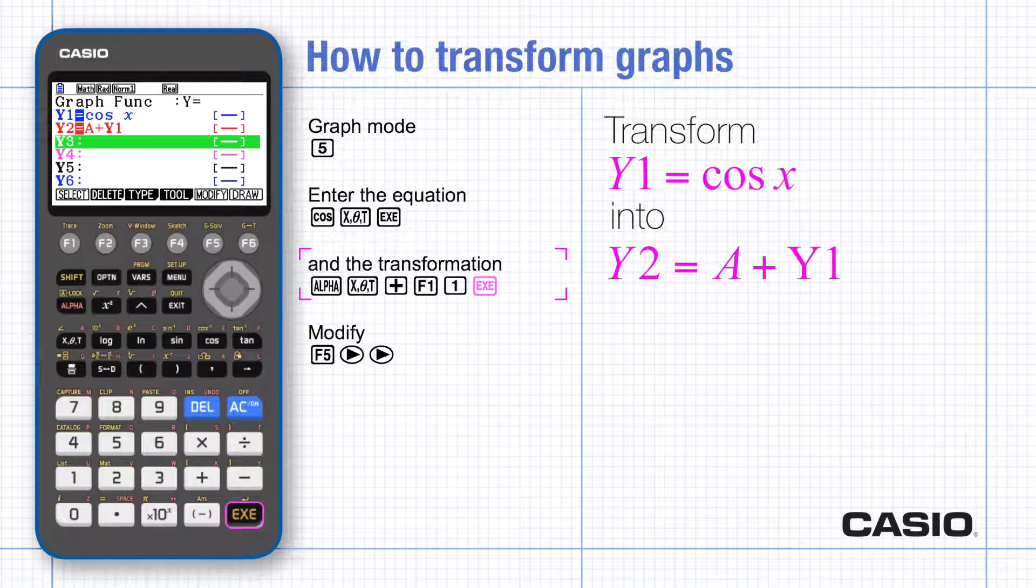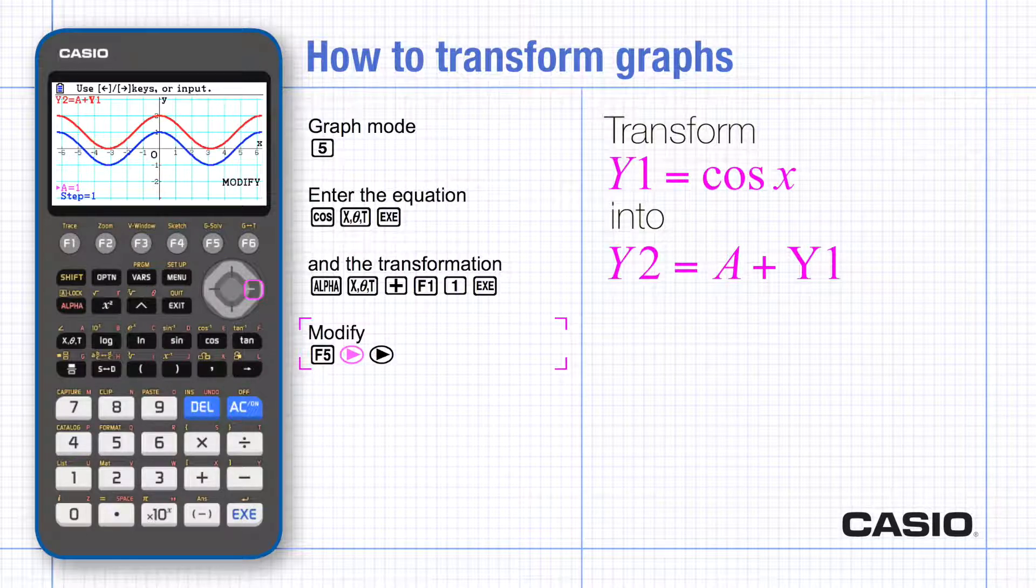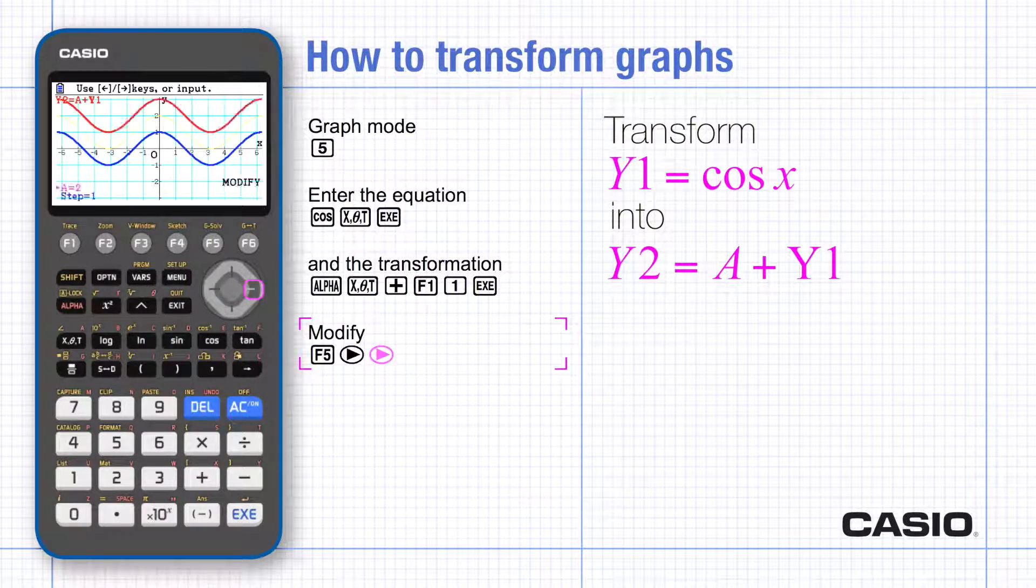Use modify and scroll sideways to change the value of the constant. Notice how the added constant translates the curve in the y direction.